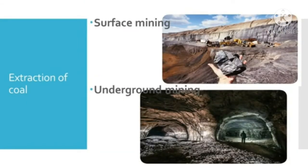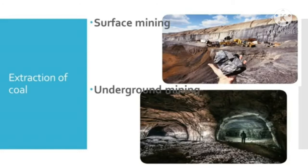Coal is extracted from the coal beds found below the surface of the earth. Coal found inside the earth is broken into pieces by explosives and brought above. Depending on the depth of the coal bed, coal is extracted in two ways: surface mining and underground mining. If the coal beds lie within 22 feet of the earth's surface, the top soil is removed and coal is dug out — this is called surface mining. In some places, coal beds are found very deep inside the earth, so underground tunnels are made to get this coal. This is called underground mining or deep mining.